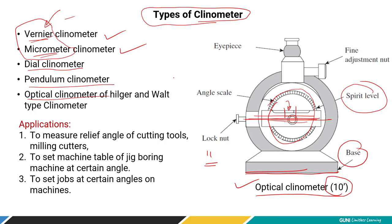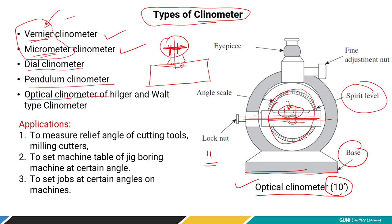If you place the device on a workpiece with a small angle, because the spirit level is being held on an inclined surface the bubble will move to the right side if inclination is in that direction. This movement is noticeable on the spirit level. To convert it into angular measurement, you rotate the scale so that the bubble in the spirit level returns to center level, and in doing so you also rotate the angular scale.